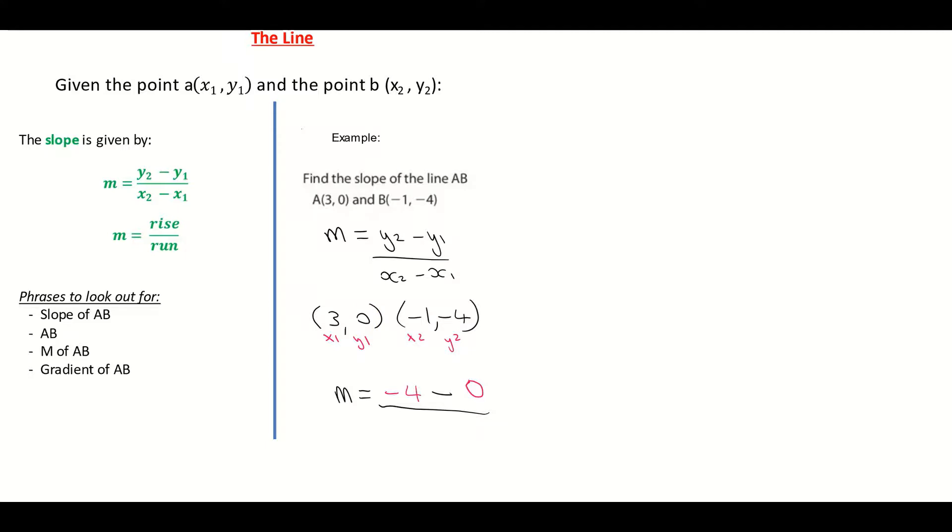And the value of my x2 is negative 1. I'm then putting back in the minus from the formula, and I'm now subtracting the value of my x1, and my x1 is a value of 3, so I'm subbing in my 3.